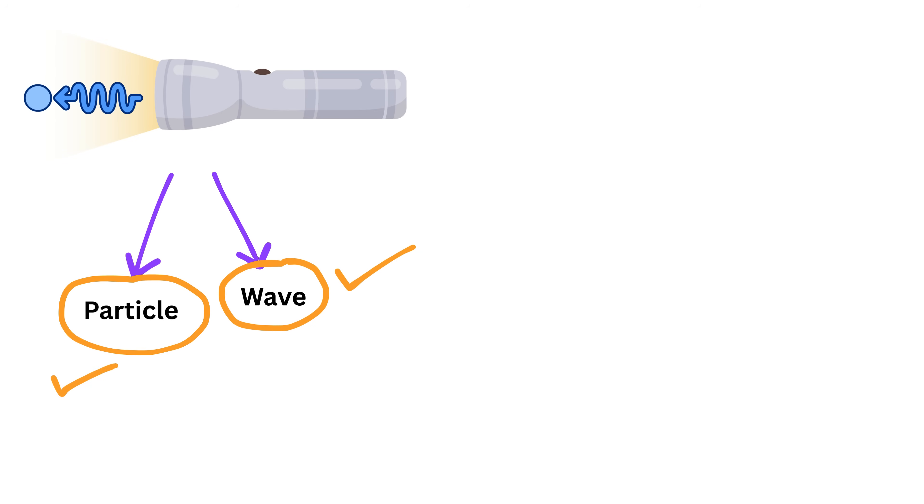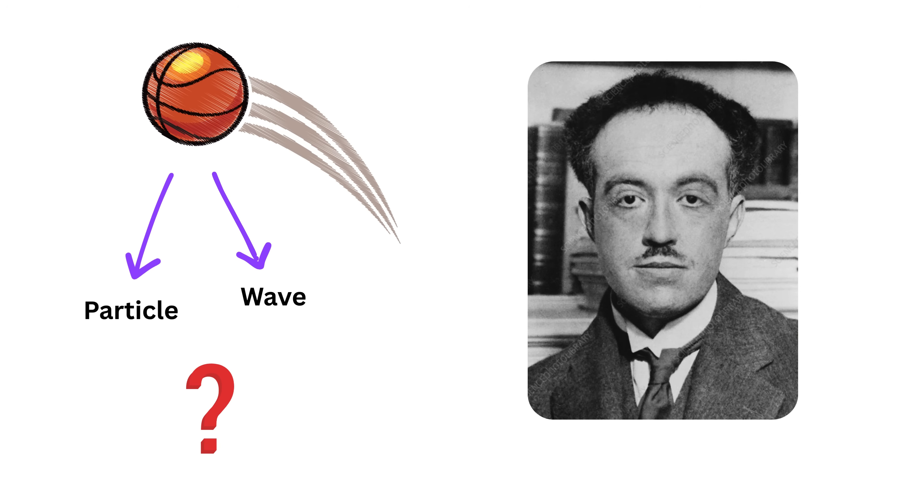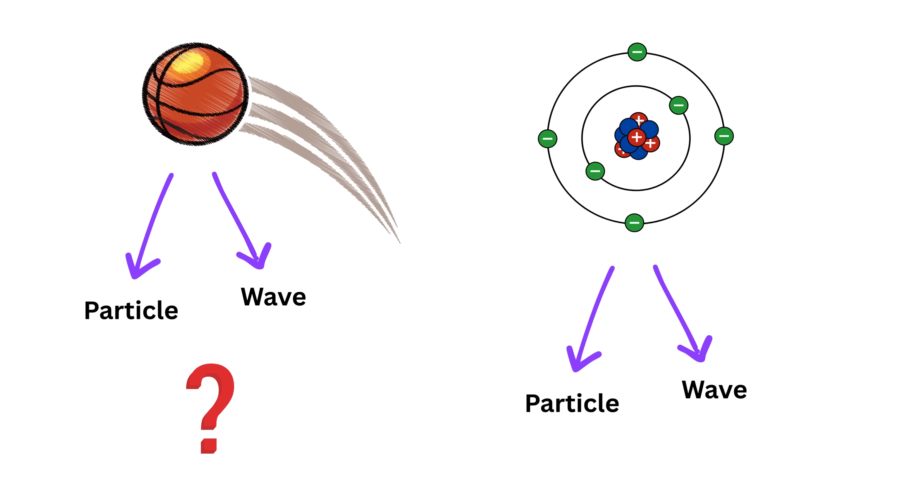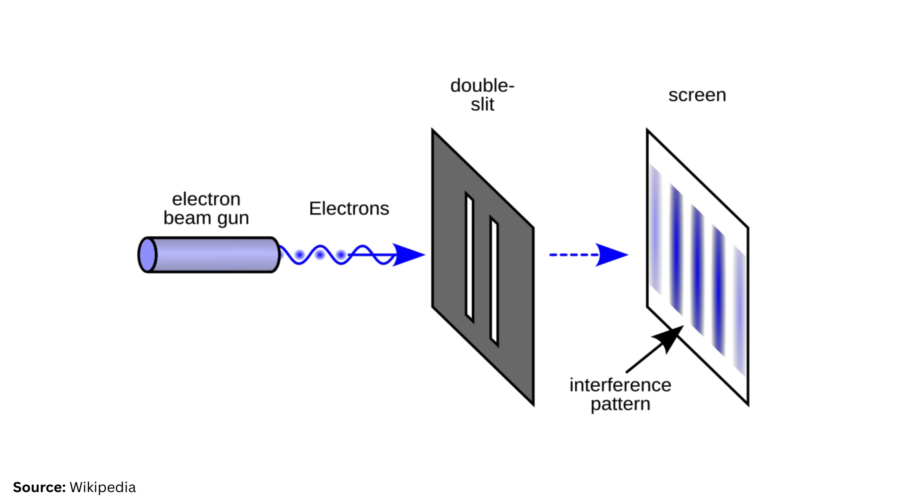If waves like light can act like particles, can particles like matter act like waves? In 1924, Louis de Broglie proposed that all matter, like electrons, atoms, or even larger objects, should also have wave-like properties. This idea, known as matter wave duality, suggested that every particle has a wavelength. Later experiments confirmed this. Even electrons can create interference patterns just like light waves.